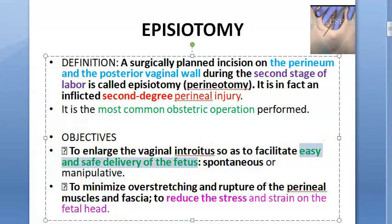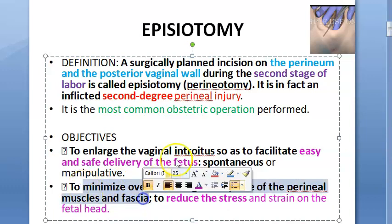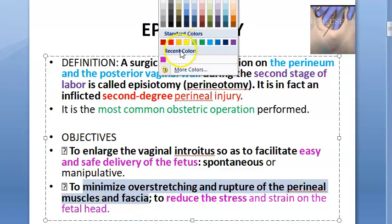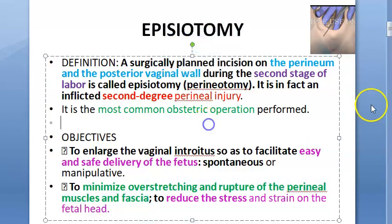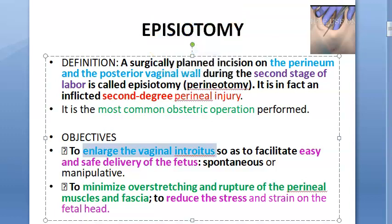Easy and safe delivery of the fetus is fetus-oriented. The mother comes in here: minimize the overstretching and rupture of the perineal muscles and fascia — you don't want to rupture her muscles and fascia, so that is the maternal benefit. What is your objective? To enlarge the vaginal introitus. What do you mean by introitus? Introitus means an entrance or opening, so you want to enlarge the vaginal opening.